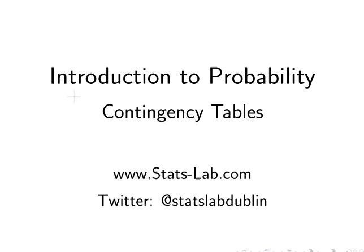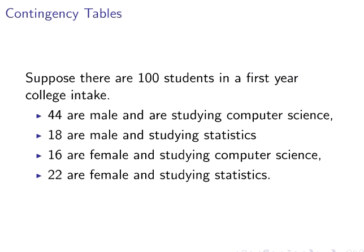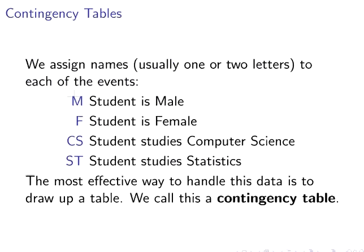In this presentation we are going to look at contingency tables. Suppose there are 100 students in a first-year college intake: 44 are male studying computer science, 18 are male studying statistics, 16 are female studying computer science, and 22 are female studying statistics. We assign names to the outcomes. A student could be either male or female — if the student is male we call that event M, and if female we call that event F.